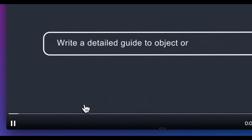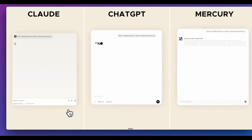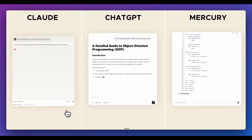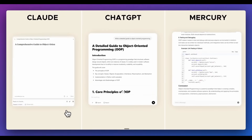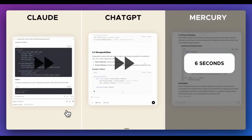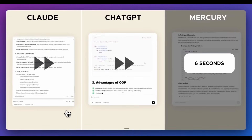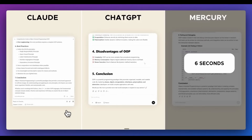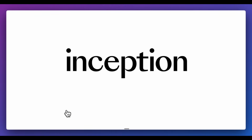Here is a visual comparison showing Claude, ChatGPT, and Mercury side by side. Within six seconds, Mercury was able to generate the response, whereas for the same question it took ChatGPT 36 seconds and Claude 28 seconds respectively.